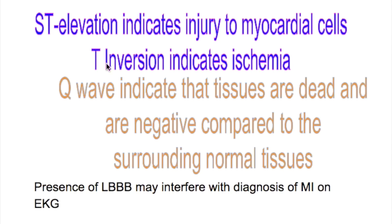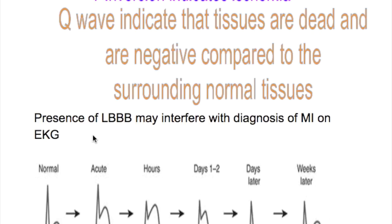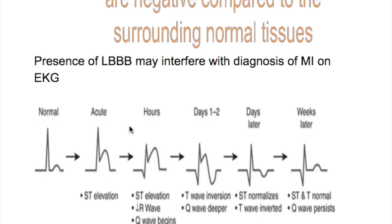ST elevation indicates injury to the myocardial tissues. T-wave inversion indicates ischemia. Q-wave indicates the tissues are dead and are electrically negative compared to the surrounding normal tissue, which is why it gives a negative deflection. Presence of left bundle branch block may interfere with the diagnosis of myocardial infarction on EKG.